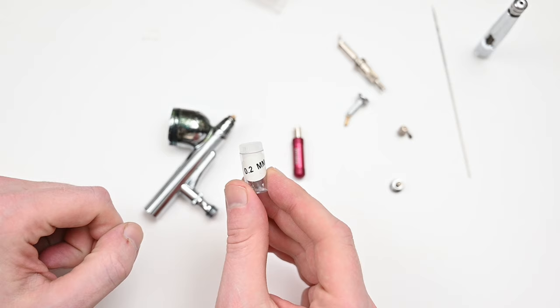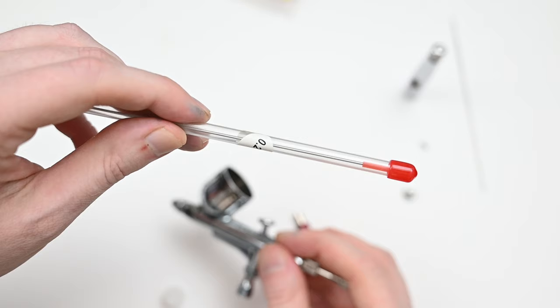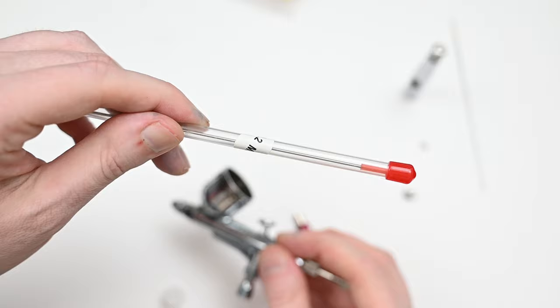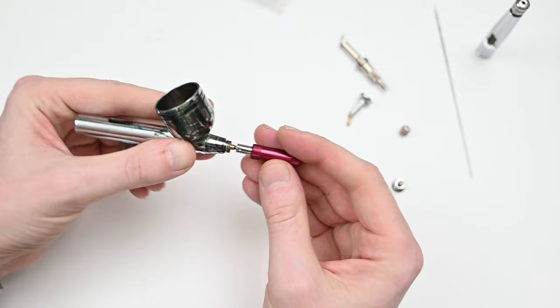For the entirety of this review, I'm going to be using the 0.2 millimeter nozzle along with the 0.2 millimeter needle. This will make the Master G233 much more of a detail airbrush, which is what I'm most interested in when painting.